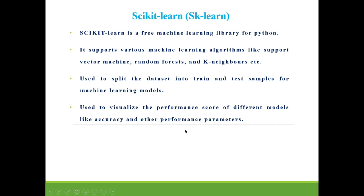Once the model is trained and we want to test the model, it gives the performance in terms of precision, accuracy, recall, or F1 score. To get the output in terms of accuracy, precision, or score, we need to import the sklearn library. This is also used for visualizing the performance score of different models. Simply put, the sklearn library is required when we want to evaluate the performance of any machine learning model.